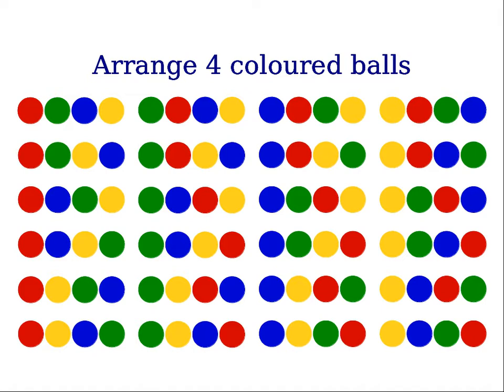This lists all possible arrangements of those four colored balls, and the total number is twenty-four, from four factorial equals twenty-four.